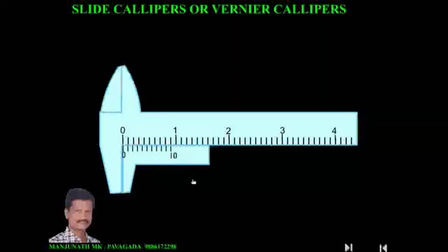The vernier scale can be moved like this. When the two jaws come in contact, zero on the main scale coincides with zero on the vernier scale. If zero on the vernier scale does not coincide with the main scale, we say there is an error — this error is called zero error. This instrument is used to measure the length of an object more accurately.